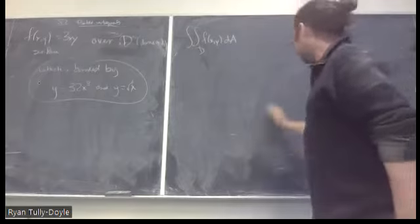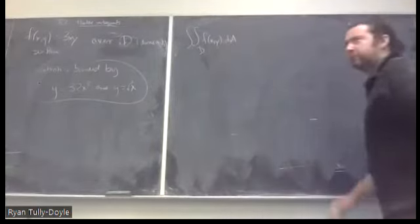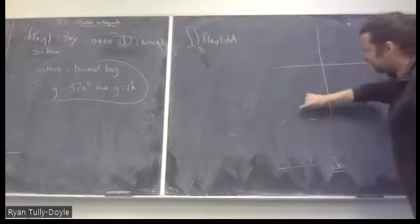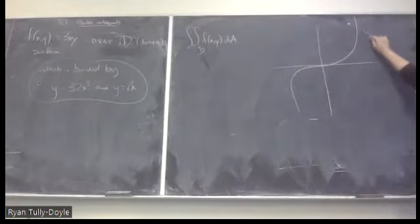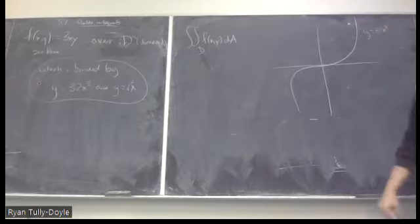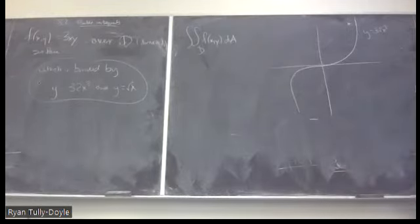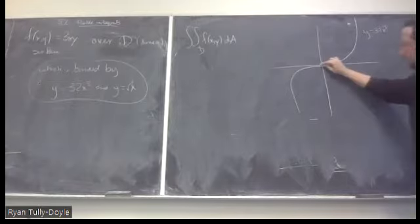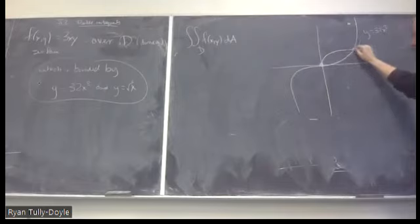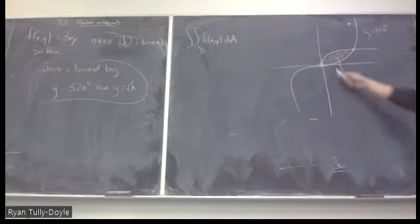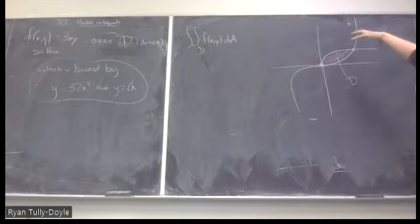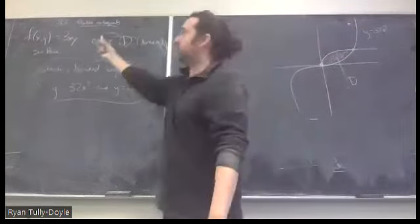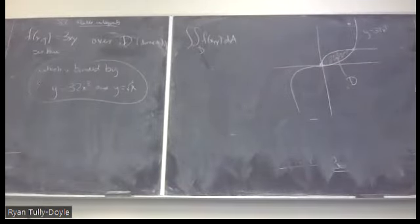In order to do that, I'm going to write the region down first. y = 32x³ is going to be some kind of variant of a cubic curve, and y = √x will come out and do this. Somewhere those curves intersect each other. The region D is right here — think about the surface as living over the top of that in space, and we're trying to figure out the volume between this shape and the surface sitting on top of it.